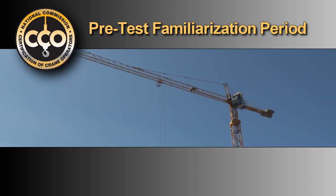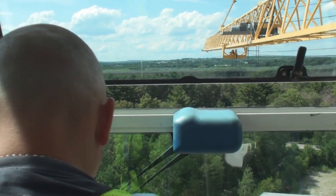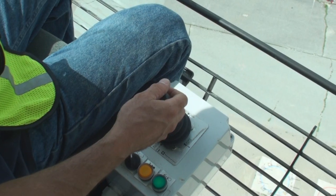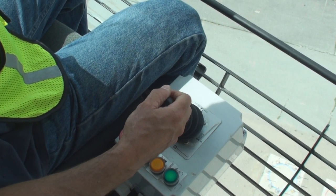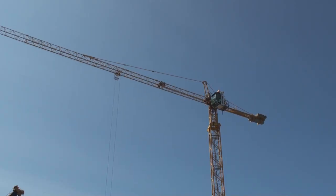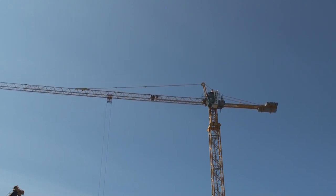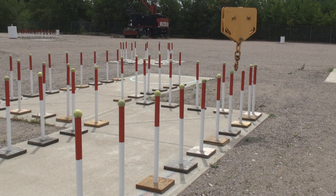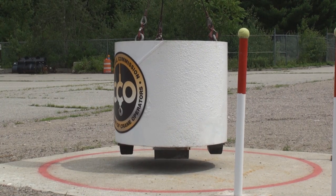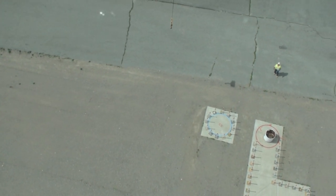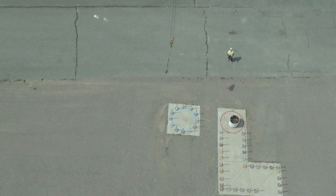You will be allowed 15 minutes to familiarize yourself with the crane and to examine anything on it that you feel is necessary to operate it comfortably. You are allowed to get the feel of the controls and are permitted to run the crane through its functions. The brakes and other devices have been set according to the crane manufacturer's recommendations. You may not interfere with the test course, attempt to lift the test weight, or shadow the corridor. You must finish the pre-test familiarization period with the hook under control in the start circle in preparation for Task 1.